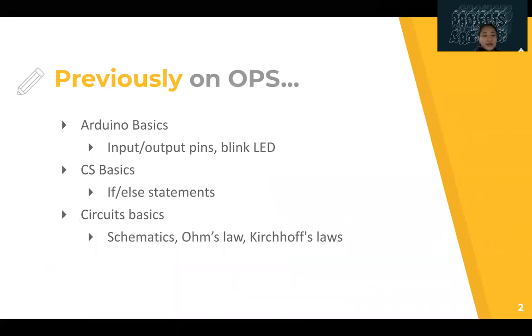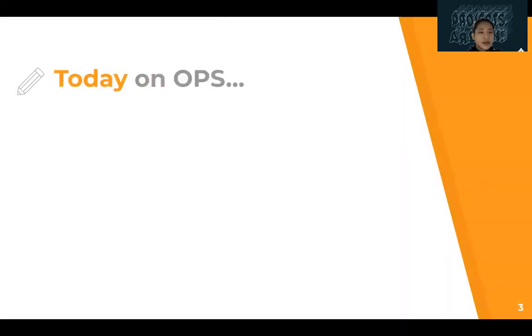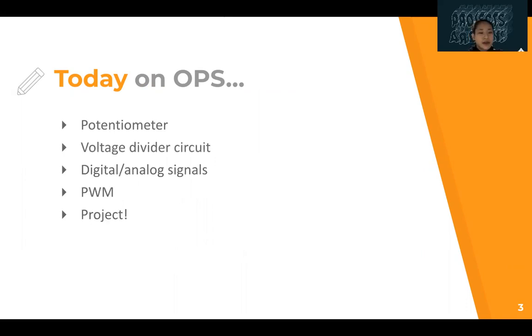So far we've covered some Arduino basics with input output pins, blinking LED. Last project was variable on the auto flashlight project and all of you guys did really well on that so we're happy to see that happening. We've been covering some circuit basics with Ohm's law and Kirchhoff's laws. Today we're going to look at another component called the potentiometer, which is basically a voltage divider circuit, and we'll also look at digital versus analog signals, PWM, and the project.